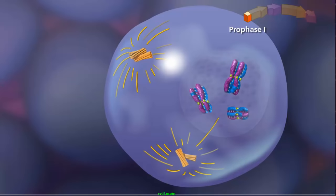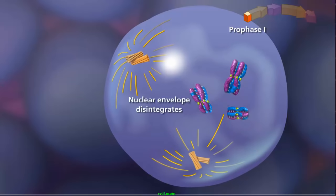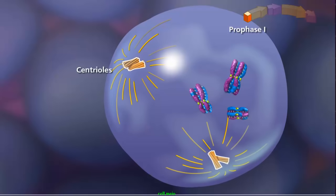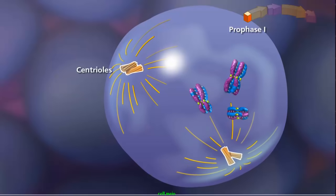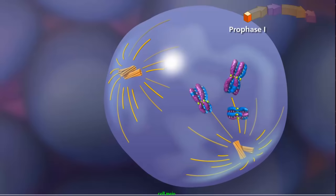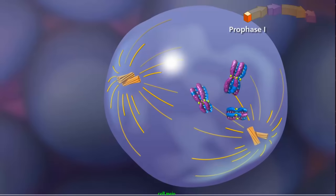Prophase I concludes with the fragmentation of the nuclear envelope as the duplicated centriole pairs move to opposite poles of the cell. As they move, the centrioles extend spindle fibers, forming the meiotic spindle.